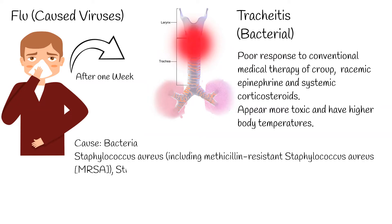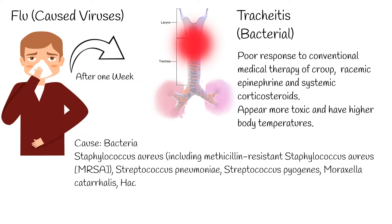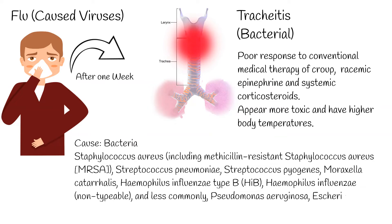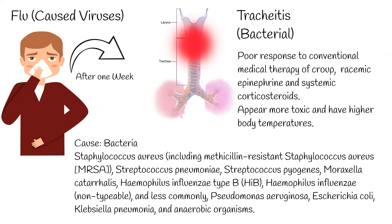The most common bacteria causing bacterial tracheitis are Staphylococcus aureus, including methicillin-resistant Staphylococcus aureus (MRSA), Streptococcus pneumoniae, Streptococcus pyogenes, Moraxella catarrhalis, Haemophilus influenzae type B, and non-typable Haemophilus influenzae. Less commonly: Pseudomonas aeruginosa, Escherichia coli, Klebsiella pneumoniae, and anaerobic organisms.